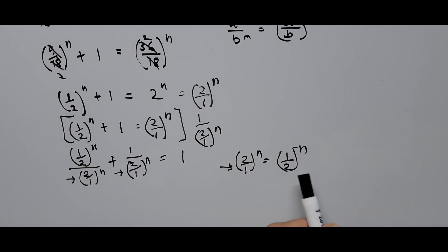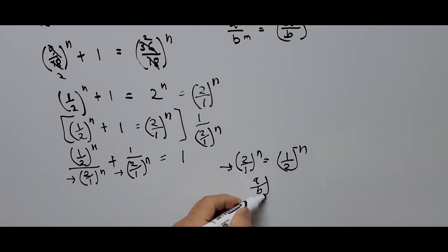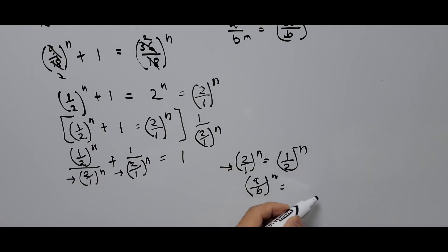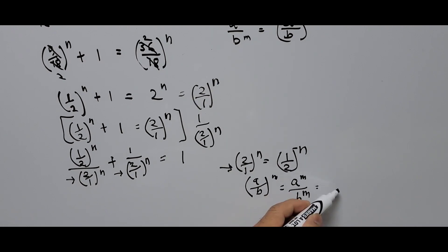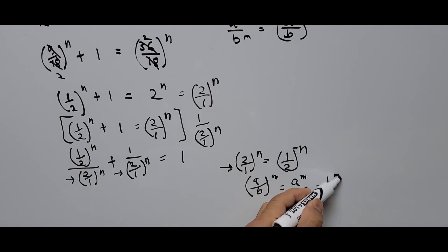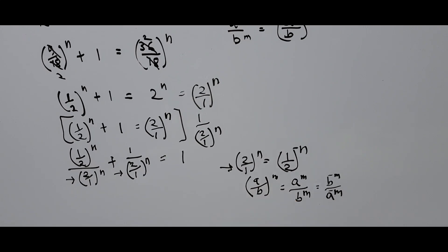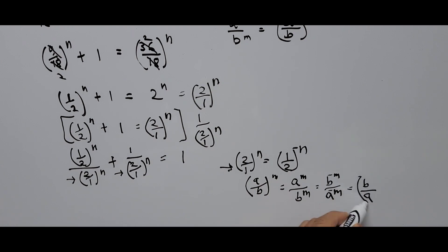We use the exponent formula: (a/b)^m can be rewritten by swapping numerator and denominator as (b/a)^m, which equals (b/a) raised to negative m. Applying this to transform the denominators on both terms on the left side of the equation.